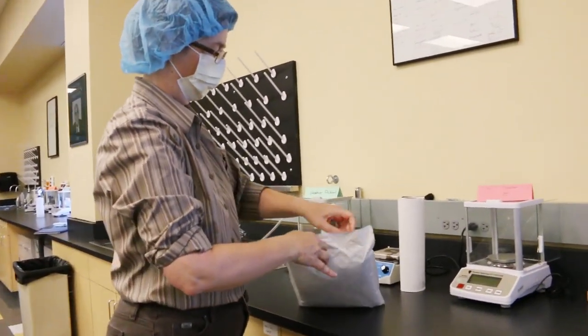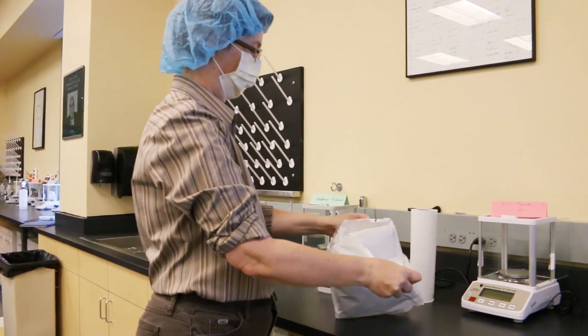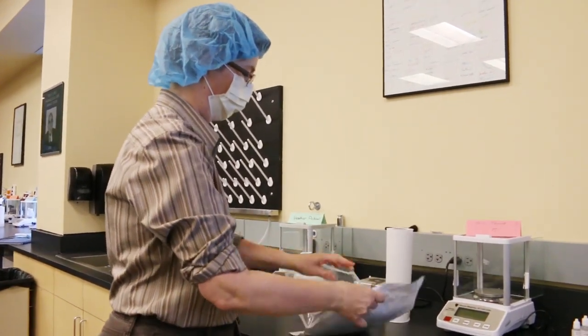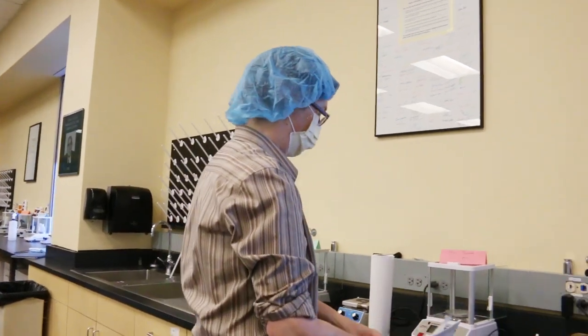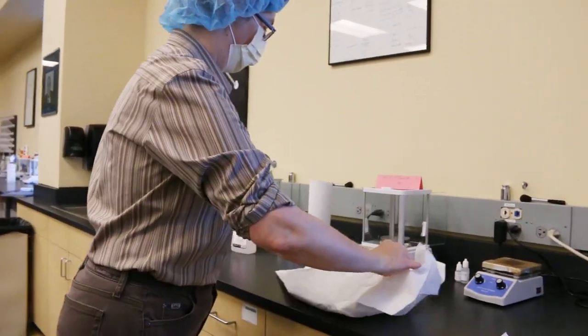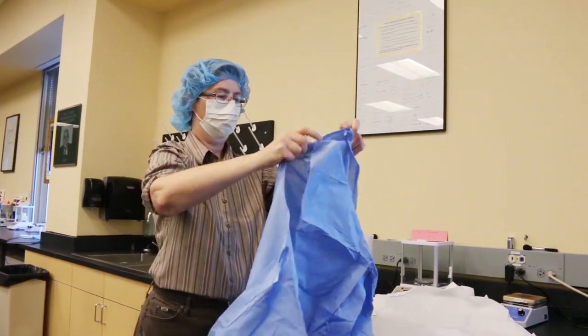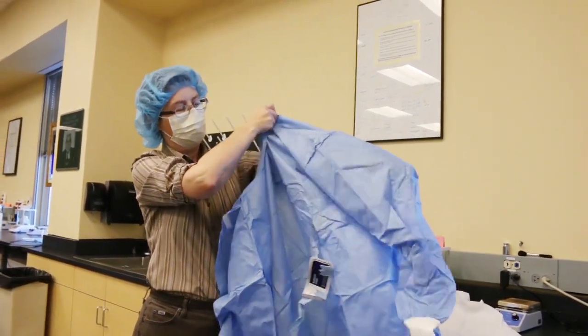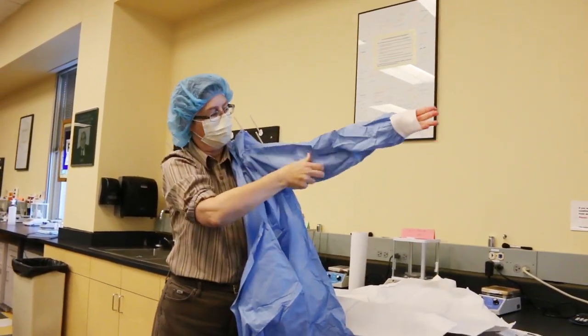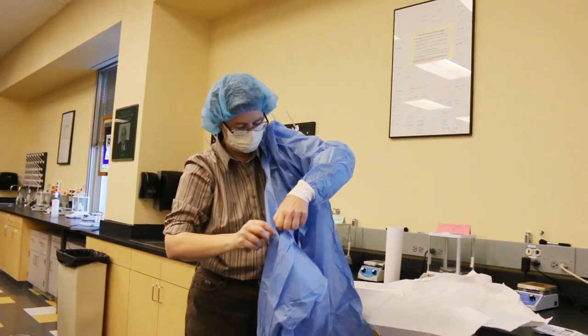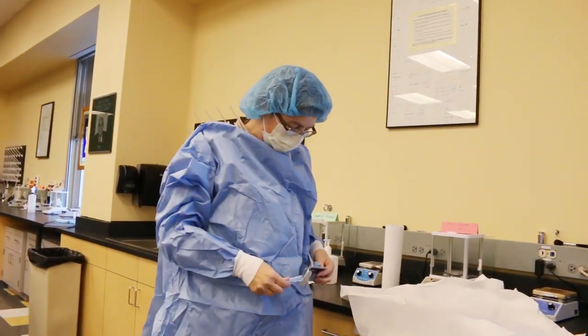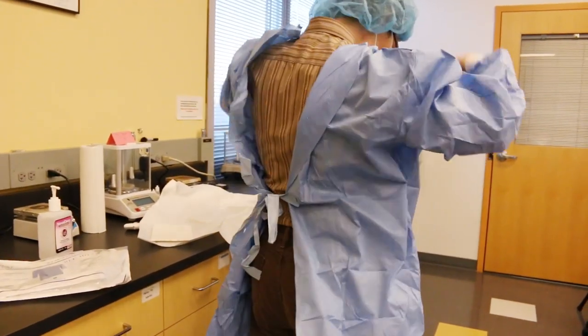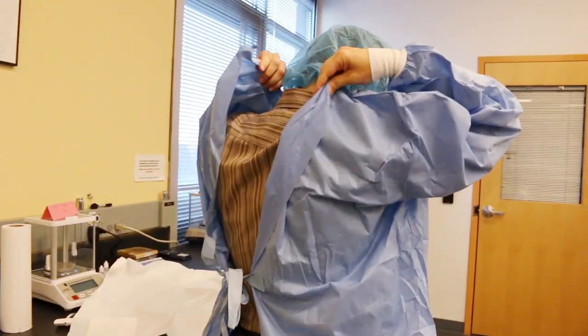Step 20, open your sterile gown package. Step 21A is to insert one arm into the open sleeve and pull it on your shoulder and then repeat with the other sleeve. Step 21B is to secure the gown at both the neck and at the waist.